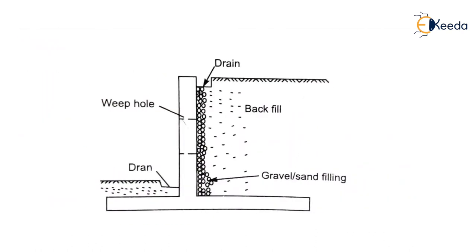As you can see in this diagram, these are the weep holes, these are the drains, and in this area soil is filled as backfill, and in these areas is the gravel and sand filling.